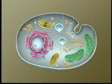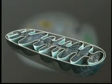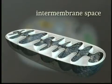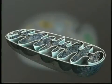Most of a eukaryotic cell's ATP synthesis occurs in mitochondria. A mitochondrion is a sac within a sac. The inner sac is folded, increasing surface area for ATP synthesis. Between the inner and outer membranes is the intermembrane space, a reservoir for hydrogen ions used for synthesizing ATP from ADP.